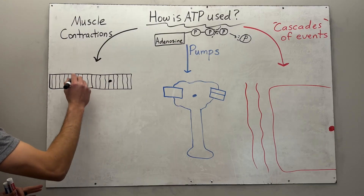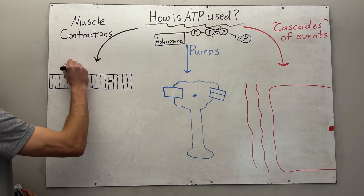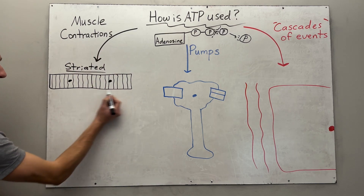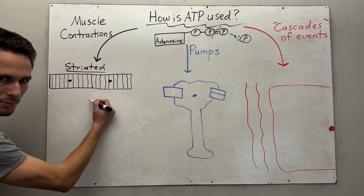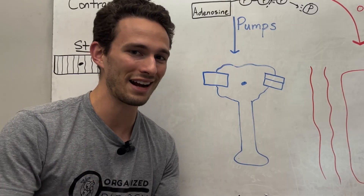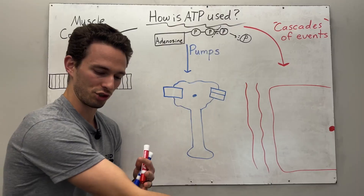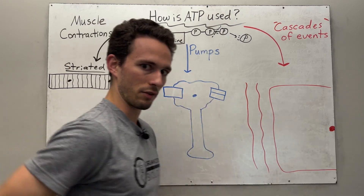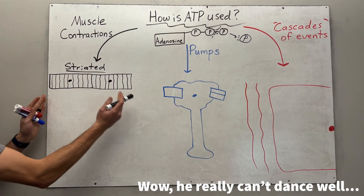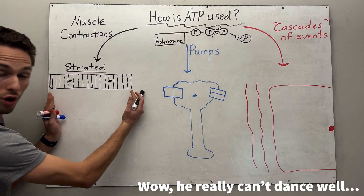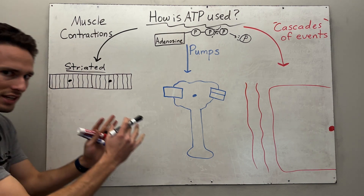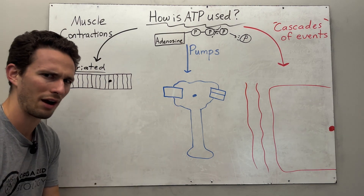Any skeletal muscle of our body is considered striated, which means it's striped. The goal of muscle cells is to contract them — to shorten them. If we shorten them, we can move our bones. We need to accordion all the lines together to contract a muscle. So how does that actually happen?